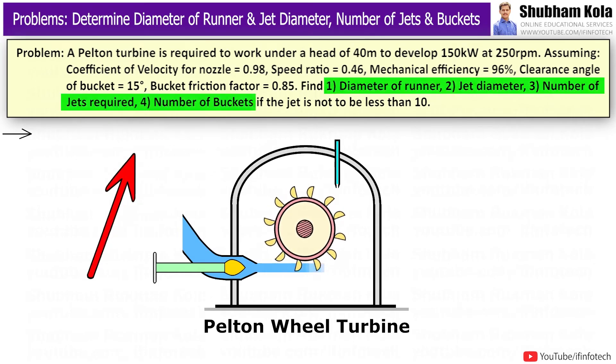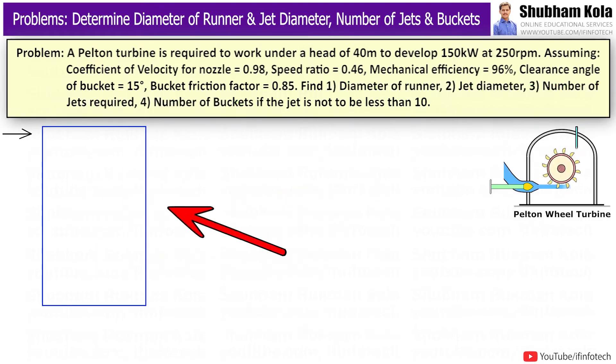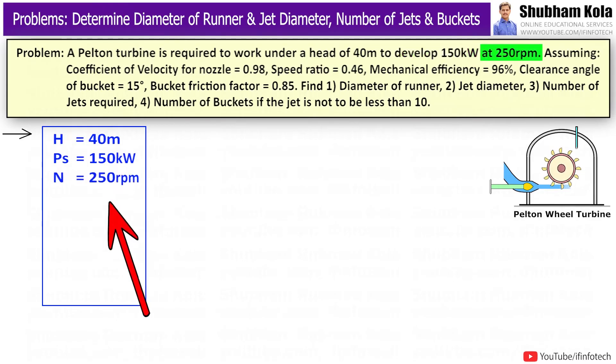In this problem, to calculate all these values, first I will write down given data which has been provided. Here available head H is 40 meter, power developed Ps is 150 kW at speed N equal to 250 rpm, the velocity coefficient for nozzle CV equal to 0.98.